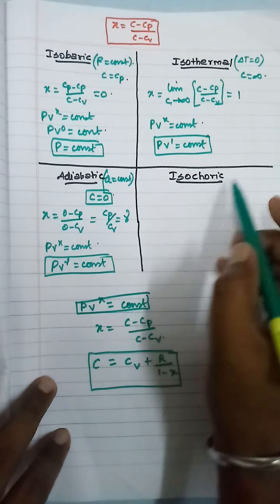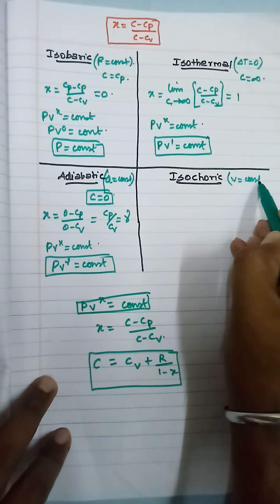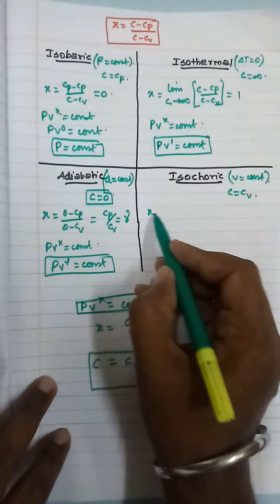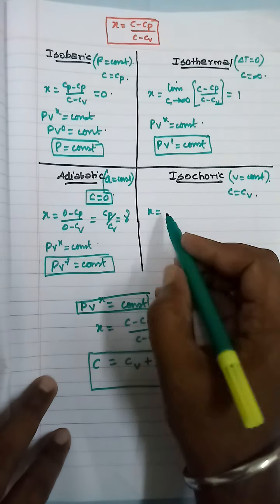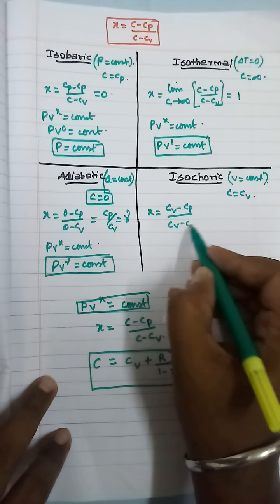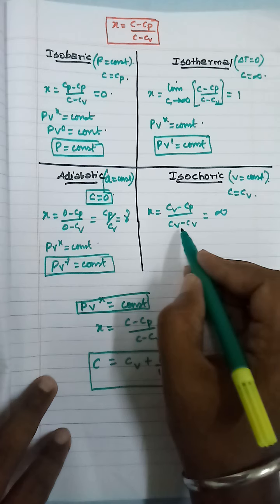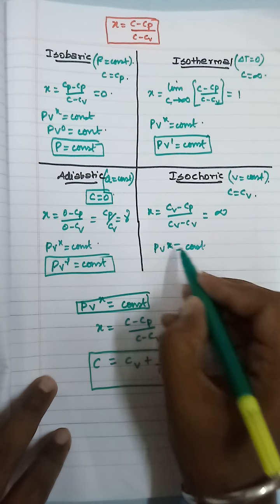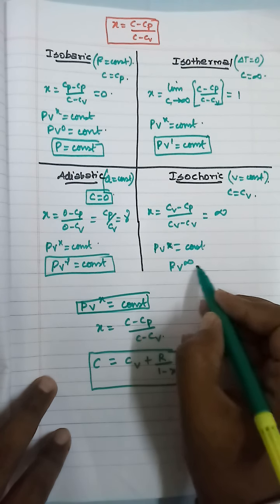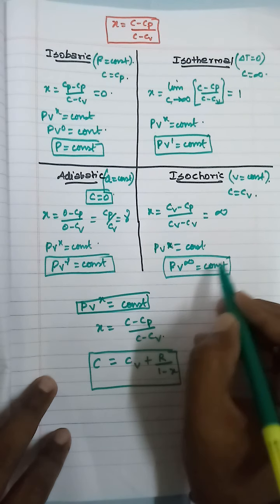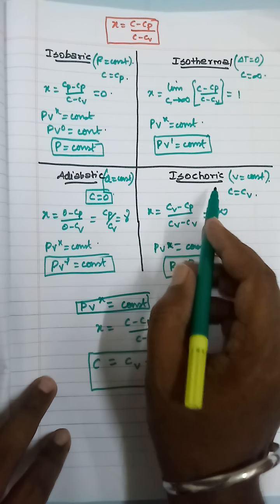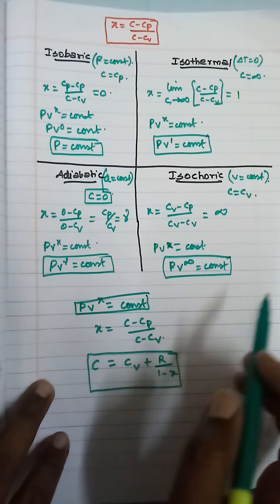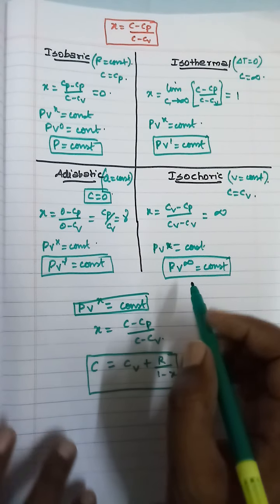For the isochoric process, volume is maintained constant, so C equals CV. Substituting into the polytropic index equation gives (CV minus CP) by (CV minus CV), where the denominator becomes 0, making X equal to infinity. By the polytropic relation, PV power infinity equals constant. This is the relation for the isochoric process. Using the polytropic process it is very easy to study different types of processes, and these relations are very useful for your examination. Thank you.